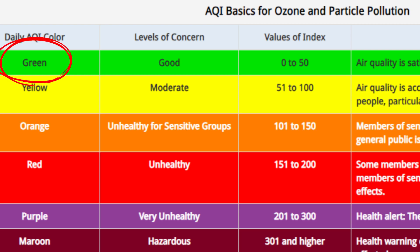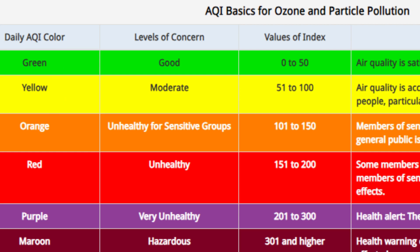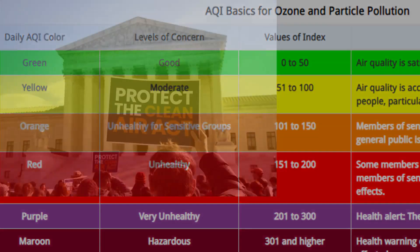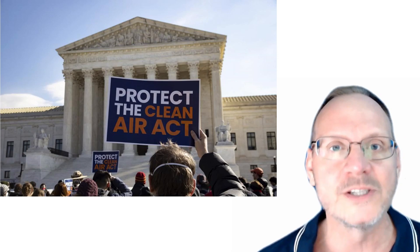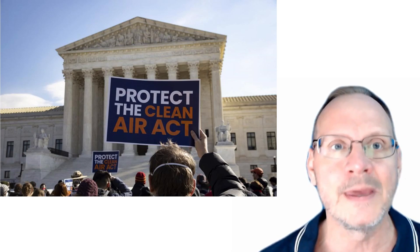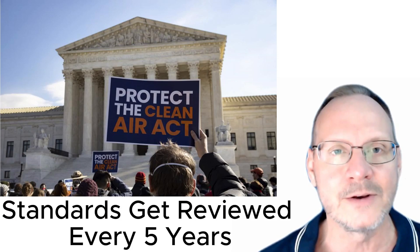Green is good, with values from 0 to 50. Yellow is moderate, with values from 51 to 100. It then moves on to orange and red, purple, and maroon.